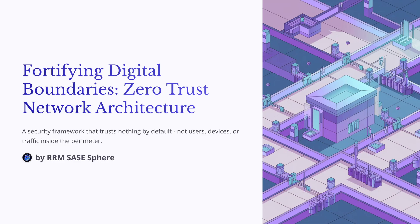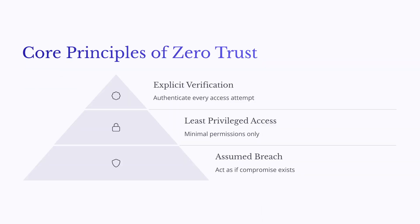Zero Trust Network Architecture (ZTNA): ZTNA is a security model that assumes no user, device, or network should be trusted by default — even if inside the organization's network perimeter. This approach is built on three core principles: explicit verification, least privilege access, and assume breach. In ZTNA, every access request is fully authenticated, authorized, and encrypted before granting access.